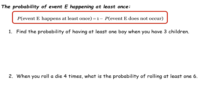In this video we're going to be talking about the probability of an event happening at least once. At least once means it could happen more than once, but just at least one time. The probability of something happening at least once is going to be 1 minus the probability that it does not occur at all. The probability that it does not occur at all is usually a lot easier to calculate, so we just calculate that, subtract it from 1, and that gives us the probability of it happening at least once.